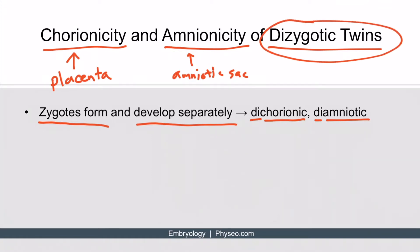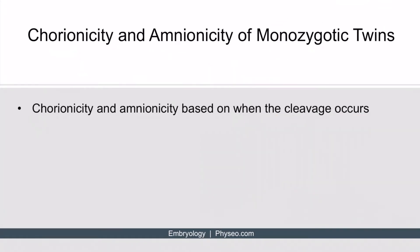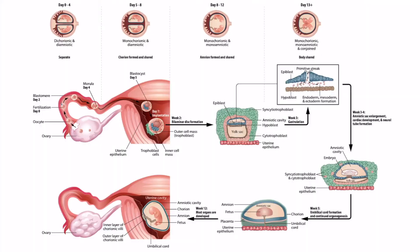Now let's discuss monozygotic twins. In monozygotic twins, the chorionicity and the amnionicity are based on when the cleavage occurs. This diagram shows an overview of embryo development over time, which is discussed in Section 1 of Reproductive Embryology.